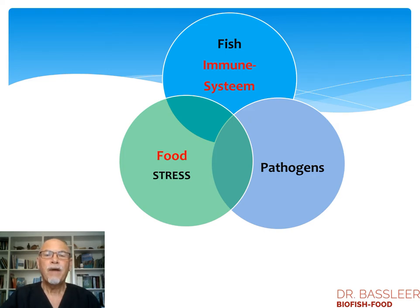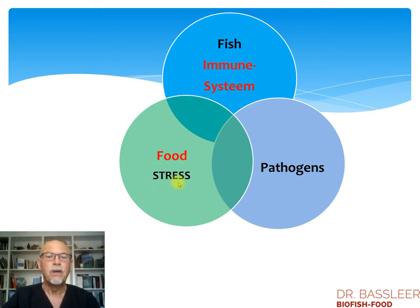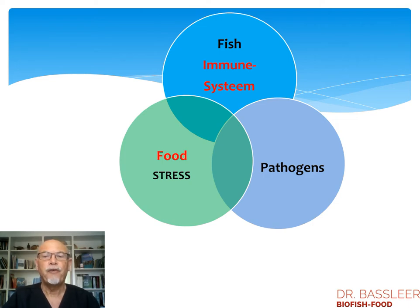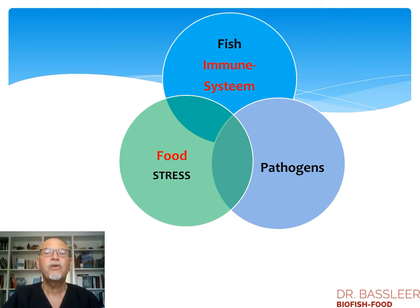The fish have an immune system, and the immune system can be influenced by the food given to the fish. Stress also has an impact on the immune system, but with food we can help the immune system, so the fish becomes strong and has more opportunities to fight off pathogens. When the fish has a stronger immune system, it has a better defense against pathogens and gets less sick.